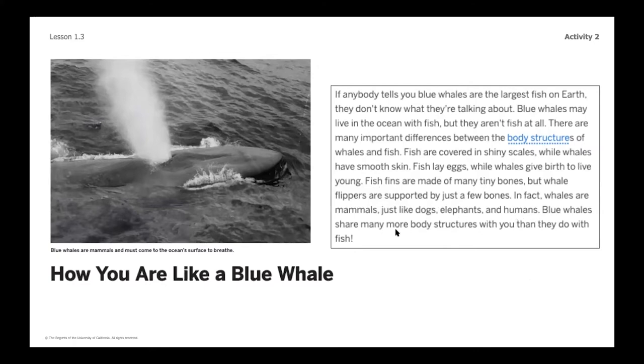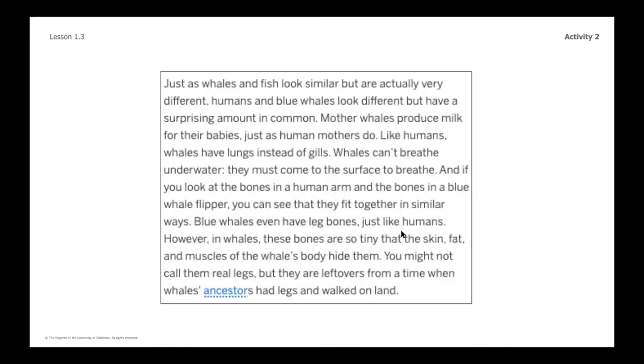Blue whales share many more body structures with you than they do with fish. Just as whales and fish look similar but are actually very different, humans and blue whales look different but have a surprising amount in common. Mother whales produce milk for their babies, just as human mothers do. Like humans, whales have lungs instead of gills. Whales can't breathe underwater. They must first come to the surface to breathe. If you look at the bones in a human arm and the bones of a blue whale flipper, you can see that they fit together in similar ways. Just pause there for a second. That's kind of like what we were looking at in the warm-up with the cat limb and the human limb.